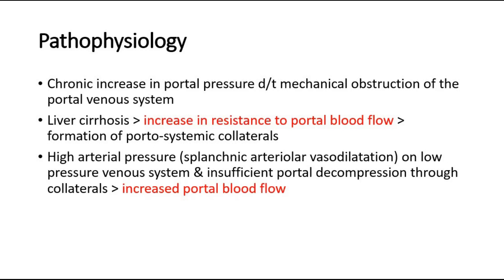When there is liver cirrhosis, which can be due to various causes, there will be architectural distortion inside the liver where nodules might compress the sinusoids, and there may also be active intrahepatic vessel constriction, causing an increase in resistance to portal blood flow — making it harder for portal blood to flow through. This will later cause the formation of portal systemic collaterals. Another cause is high arterial pressure due to splenic arteriolar vasodilation on the lower-pressure venous system, increasing portal blood flow.